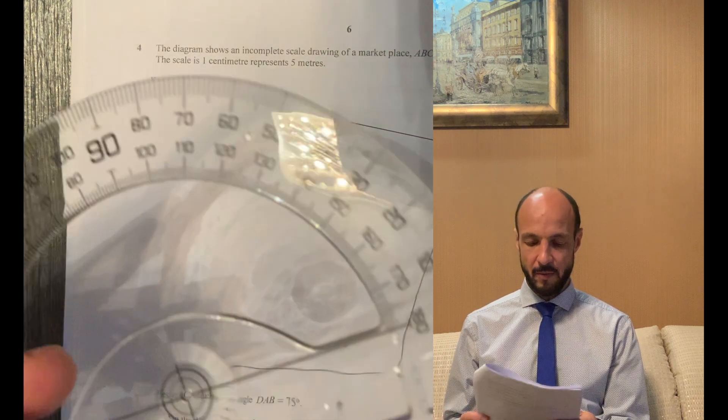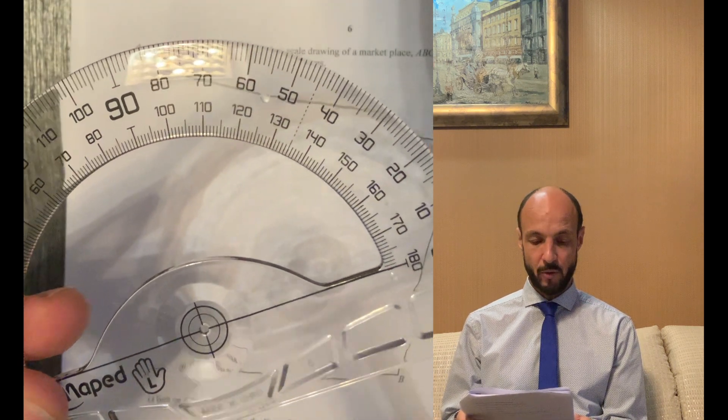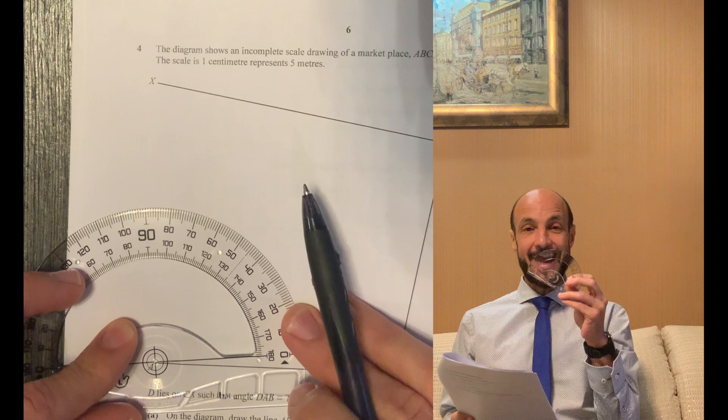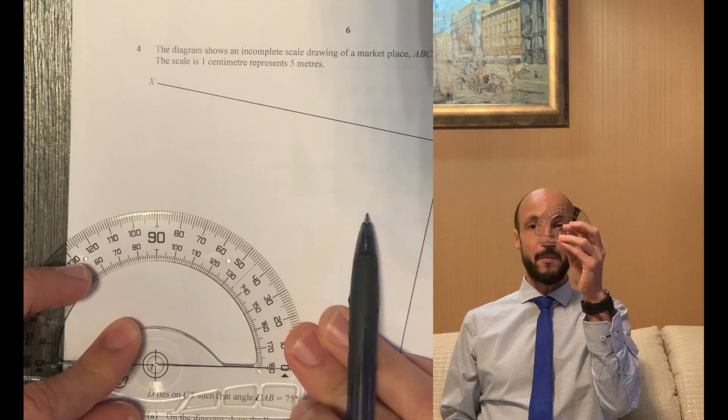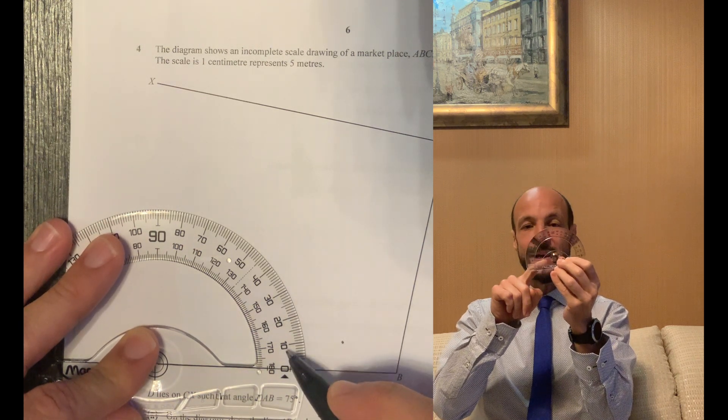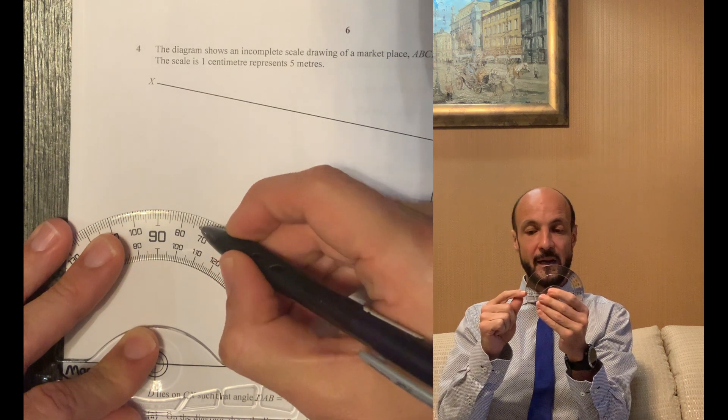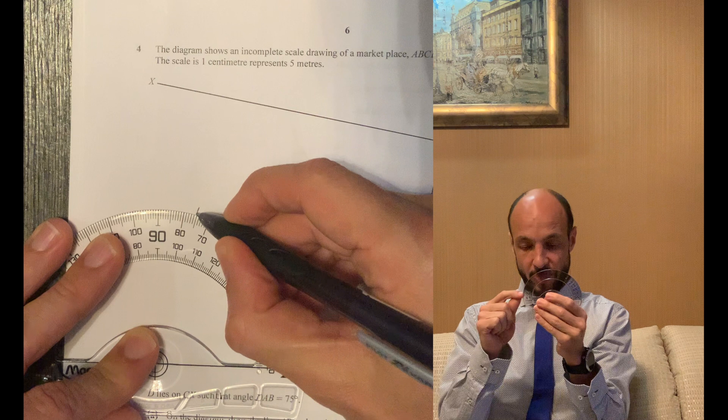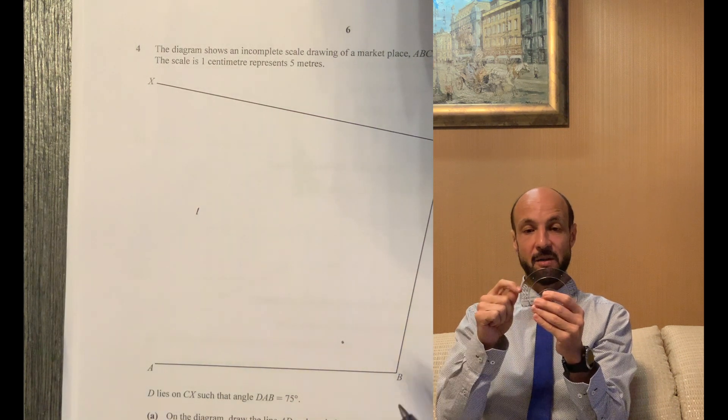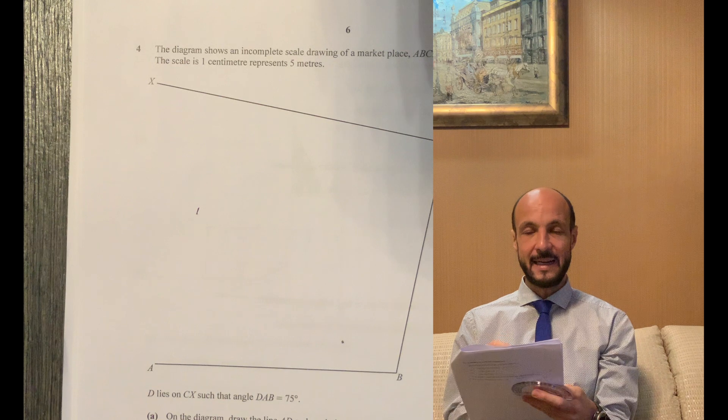What we need to do is mark an angle from the line BA of 75 degrees. So we get our protractor and put the center at point A, making sure that the line of the protractor is going down the line AB. Once that's happening we can count from our zero degrees, making sure the zero is towards point B, we can count up to 75 degrees. So we count up in tens to 70 and then a further five to 75 degrees and we mark that point nice and clearly.